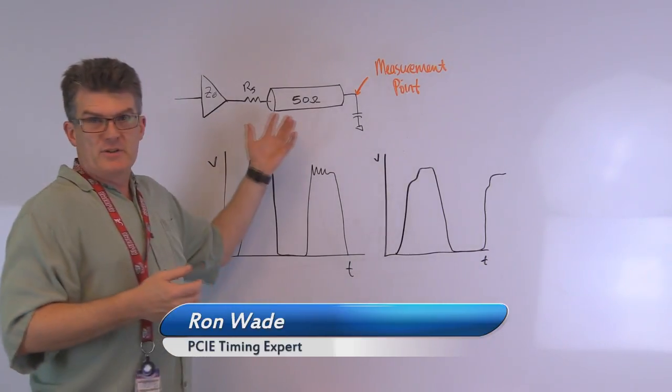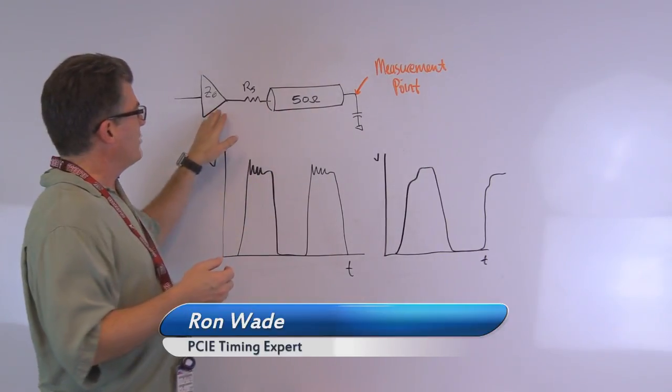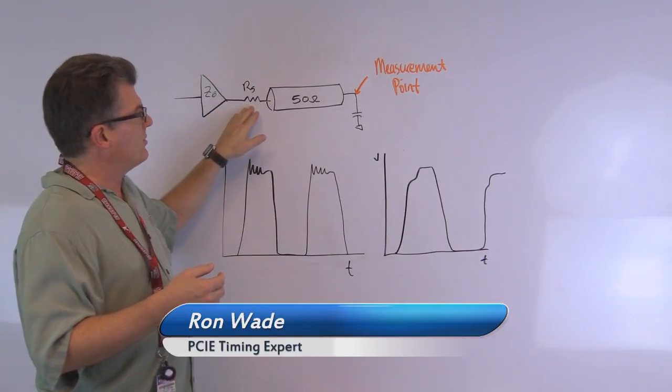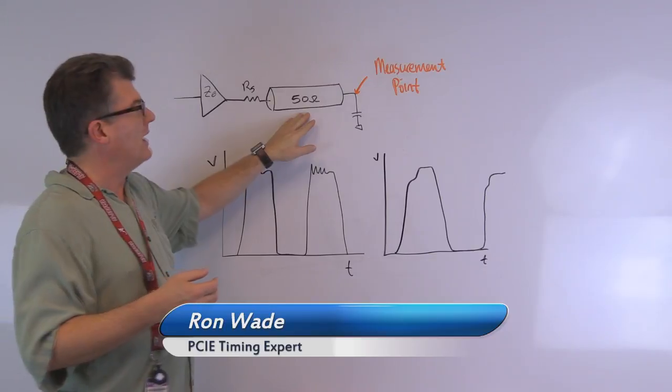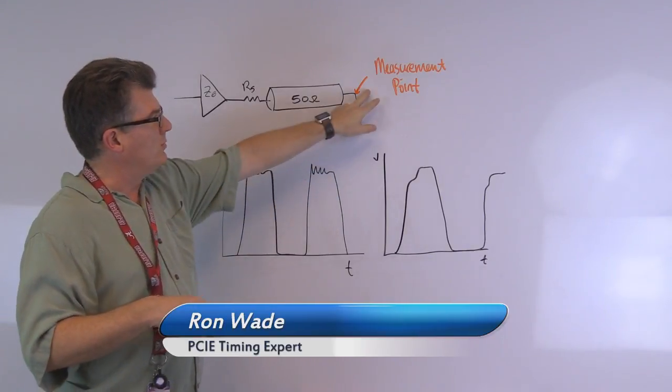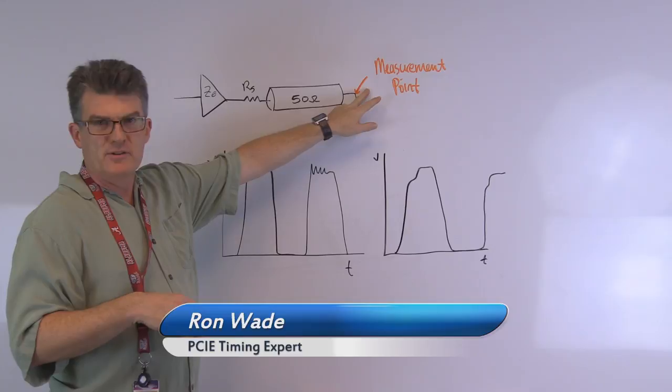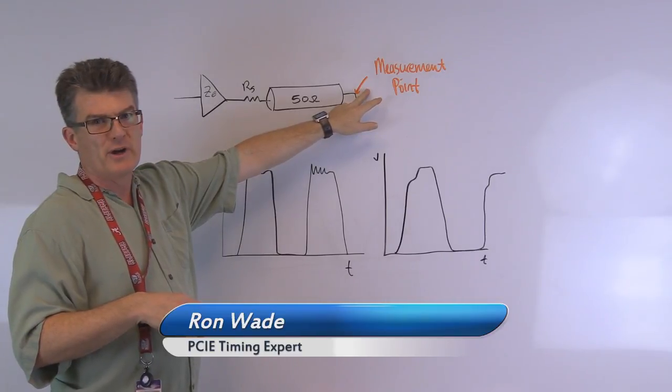So what I have is a typical clock transmission line here with the clock driver and the series resistor driving a 50-ohm transmission line. And again, all of these waveforms are drawn assuming we're measuring at the very end of the transmission line as mentioned in prior videos.